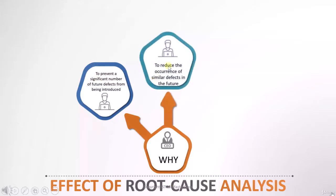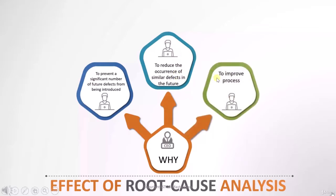The second point is to reduce the occurrence of similar defects in the future — all calculation-type mistakes we will review to ensure they are not again seen by the customer. The third point is to improve the process. If we find that a review happened but an issue still slipped through, we can improve our process and add additional measures to find such types of defects.